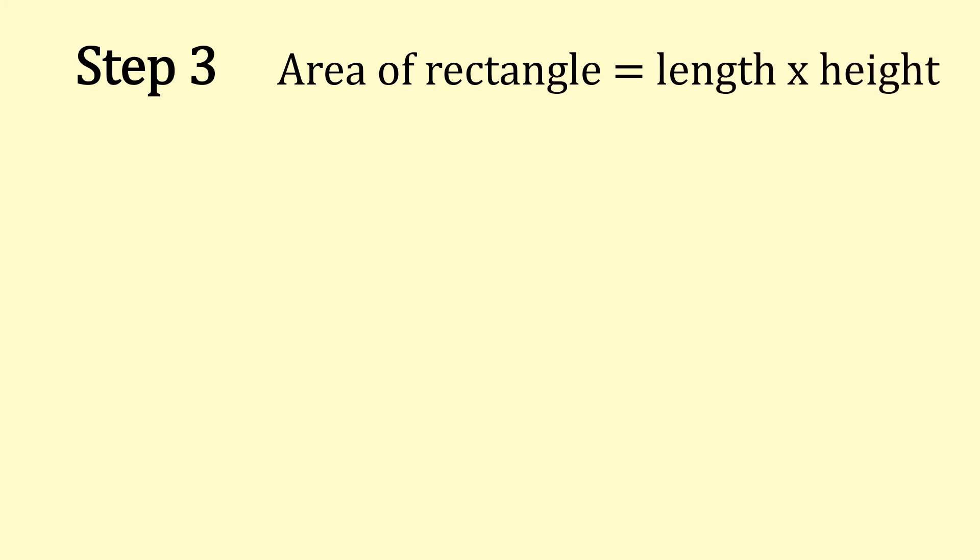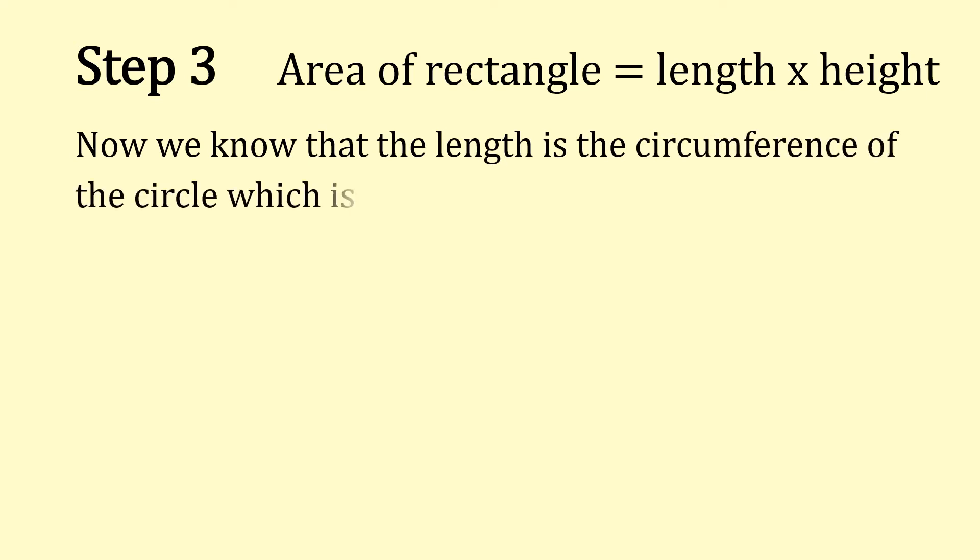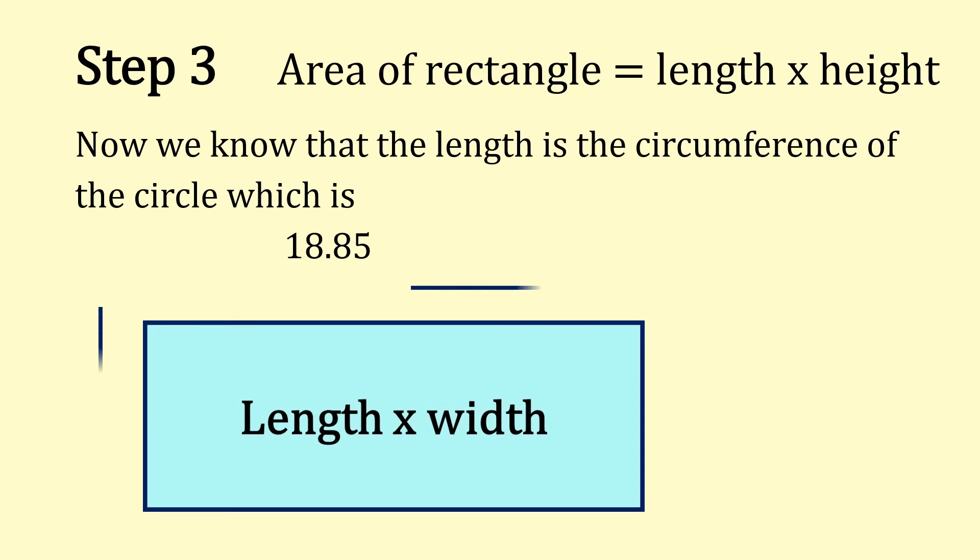Step 3. So the area of the rectangle is length times height. Now we know what the length is, which was our circumference, that's 18.85. We're going to times that by 4.